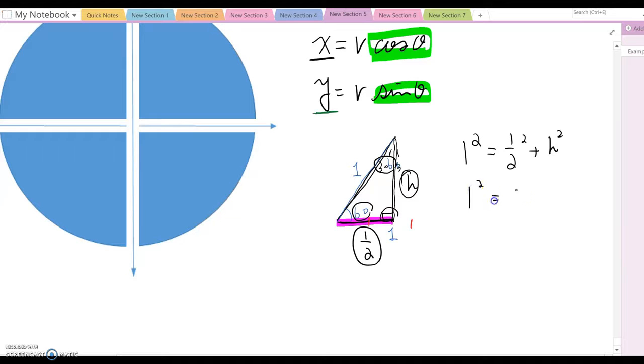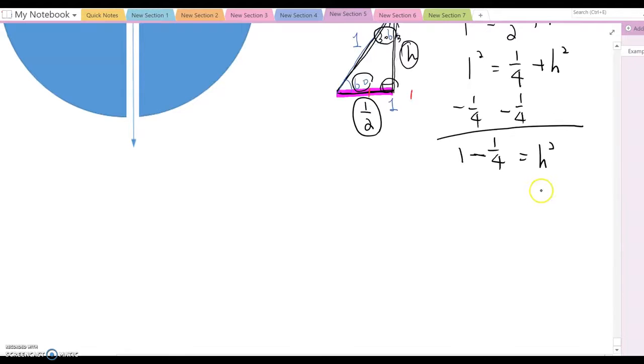Then, 1 squared equals 1 over 4 plus h squared. We are going to find out what h is. Subtract 1 over 4, then h squared equals 1 minus 1 over 4. Common denominator is 4, so h squared equals 4 minus 1 over 4, which means h squared equals 3 over 4. Therefore, take square root, then h equals root 3 over 2.